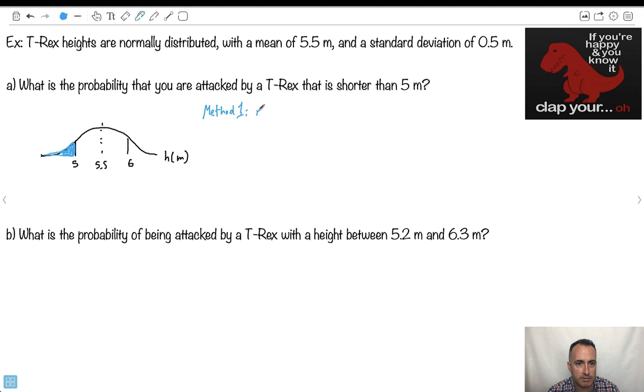So one way to do it would be method 1. Let's use normalcdf, just like I was discussing. So normalcdf, let's do that. And we'll put in the minimum. Now what's the minimum I should put here? Should I put in 0? Like what's the smallest number? I mean, you should attempt to put in minus infinity if you can. Obviously you can't, but do a really small number. Maximum should be 5. Mean should be 5.5. Standard deviation should be 0.5. This is what you should do.